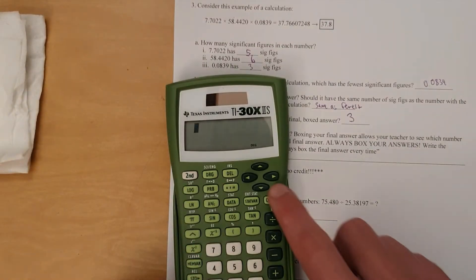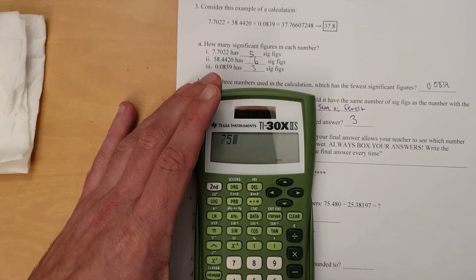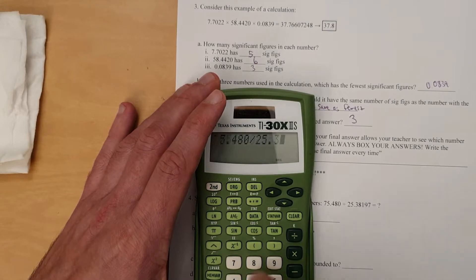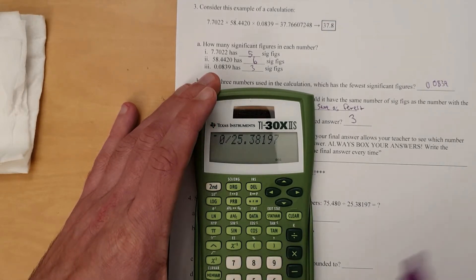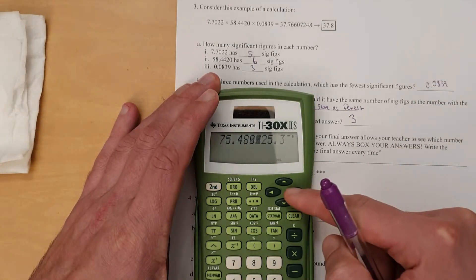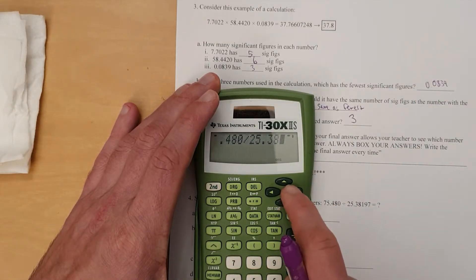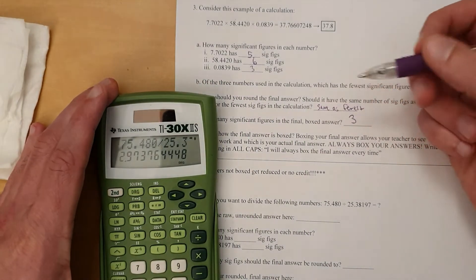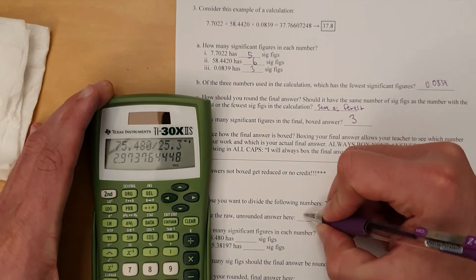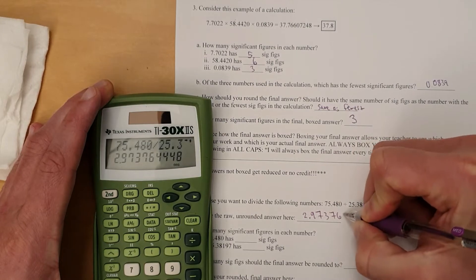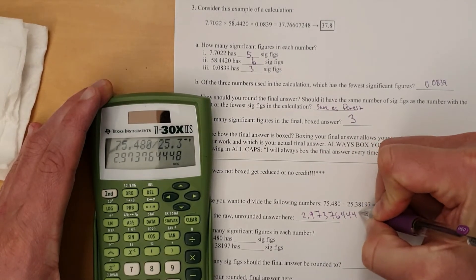So your raw, unrounded answer. 75.480 divided by 25.38197. So, and I'm just double checking to make sure I got it in there. 25.38197. Okay. Yeah, that's the raw calculator answer. So that is 2.973764448.